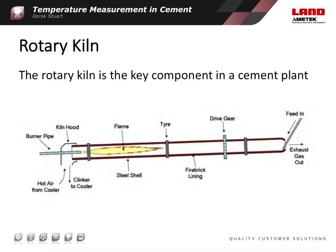The rotary kiln is the key component in any cement plant, and it is where the raw materials, predominantly limestone and clay, are converted to dicalcium silicate, or C2S, and tricalcium silicate, or C3S, which are the principal components of the clinker, which is then ground to form Portland cement. A modern dry process cement kiln is typically around 70 meters long, 6 meters in diameter, and rotates 3 times per minute. It's one of the largest moving items in any process industry.